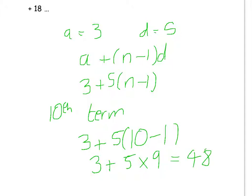So remember, A refers to the first term, D is the common difference, and the rule is A plus, in brackets, N minus 1 times D.